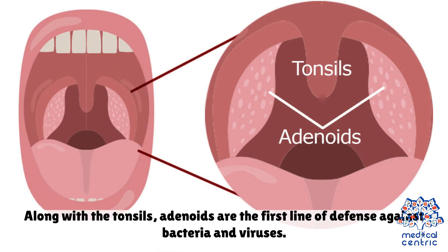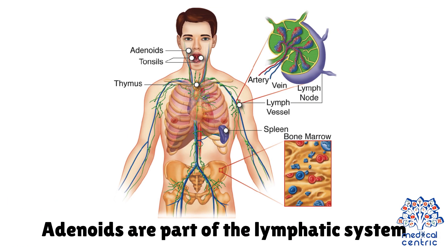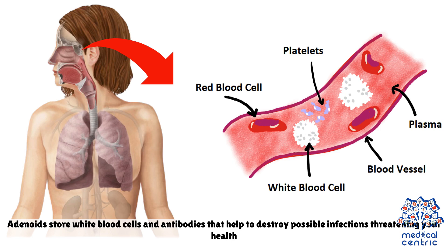Along with the tonsils, adenoids are the first line of defense against bacteria and viruses. The lymphatic system performs several roles to help protect you against infection. Adenoids are part of the lymphatic system.